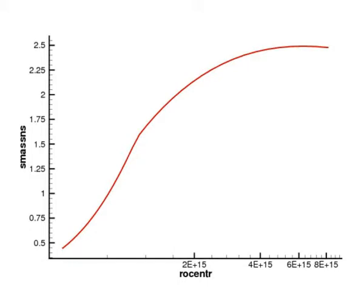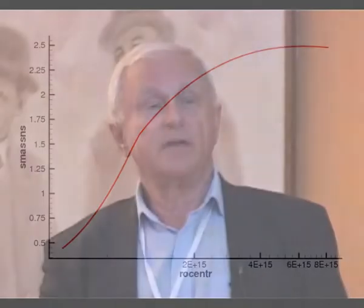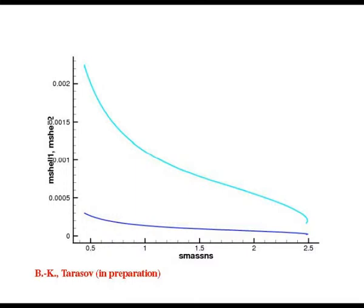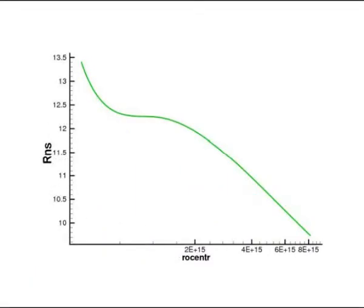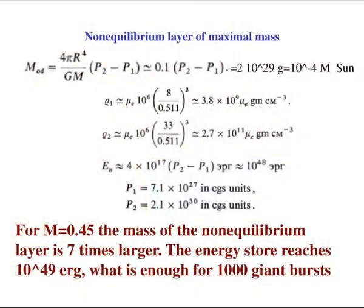If the matter by some quake goes out, it could start a chain reaction and a strong explosion — not thermonuclear but nuclear. We estimated many years ago, in the mid-1970s, that the energy inside this layer could be 10^48 ergs, which is enough for several bursts. This was connected with gamma-ray bursts. Now, a very promising idea: if you decrease the mass of the neutron star, the thickness of this non-equilibrium layer increases — for example, for 0.5 solar masses it increases by about 10 times.